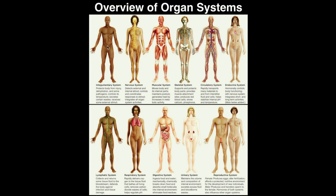First, let's talk about the integumentary system, which consists mainly of the skin, but also the hair on your body and nails on your fingers and toes. The integumentary system is really just a big protective barrier for the body. It prevents deeper tissues underneath the skin from getting injured.